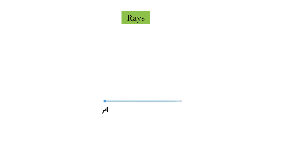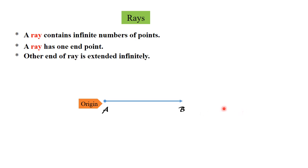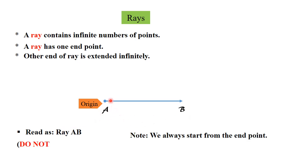Another geometric figure is ray. A ray is a part of a line and it starts at one end and goes forward continuously in the same direction. The starting point of a ray is called the origin, and an arrow head is drawn to show that the ray is infinite in the direction of B. A ray contains infinite number of points. A ray has only one end point, and the other end is extended infinitely. It can be read as ray AB — use the origin first and then write the other point.